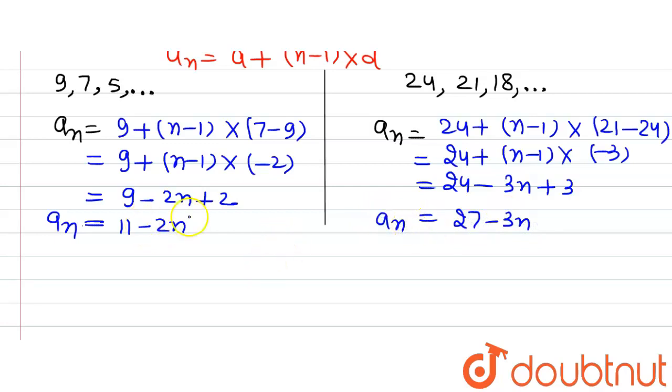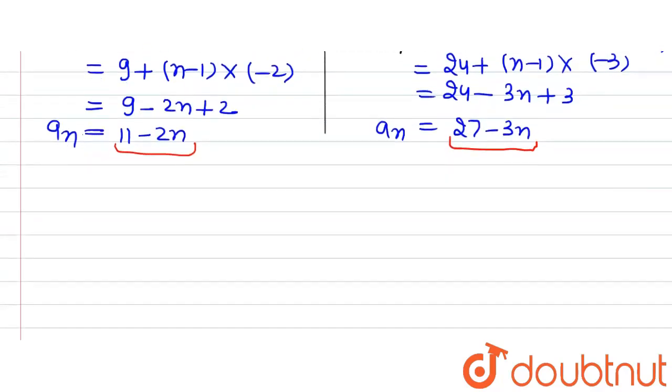According to the question, these terms are the same, so we can equate the two expressions. Let's equate them and find n. We have 11 - 2n = 27 - 3n.